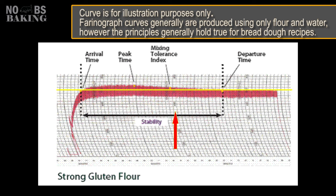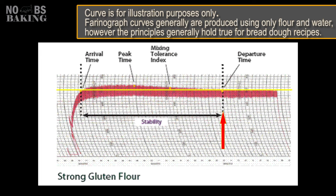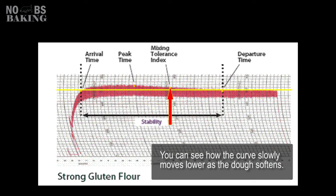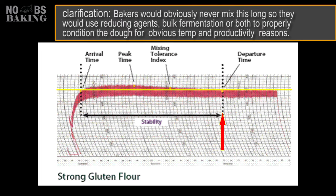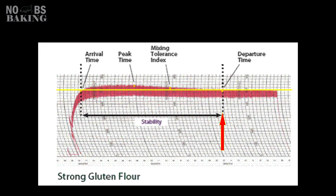We're going to skip MTI, with the next most important point on the graph being departure time. Between peak and departure is the time where the dough begins to develop its extensibility and softening, creating a nice translucent membrane — or the old windowpane. From arrival to departure reflects the stability time, which is used by bakers to determine optimum mix times for a flour based on their processes. It's important to keep in mind that this dough has no salt added in these tests, so even without the strengthening effect that salt has on gluten, this flour can ride out a total mix time of near 25 minutes with minimal degradation, and even longer — the curve indicates only small degradation up to around the 35-minute mark.